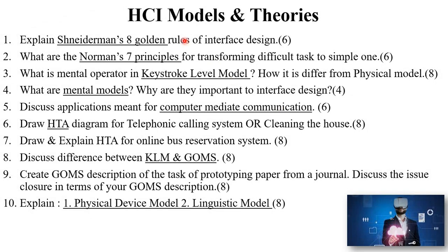The next important topic is HCI models and theories. On this topic they will ask: explain Shneiderman's 8 golden rules of interface design — prepare all golden rules with proper naming conventions and explain them with examples for 6 marks. Next: what are Norman's 7 principles for transforming difficult tasks to simple ones? Mention all 7 principles with explanation point-wise for 6 marks. Next: what is the keystroke level model and how is it different from the physical model, for 8 marks? And: what are mental models and why are they important to interface design, for 4 marks — draw the diagram and explain point-wise.